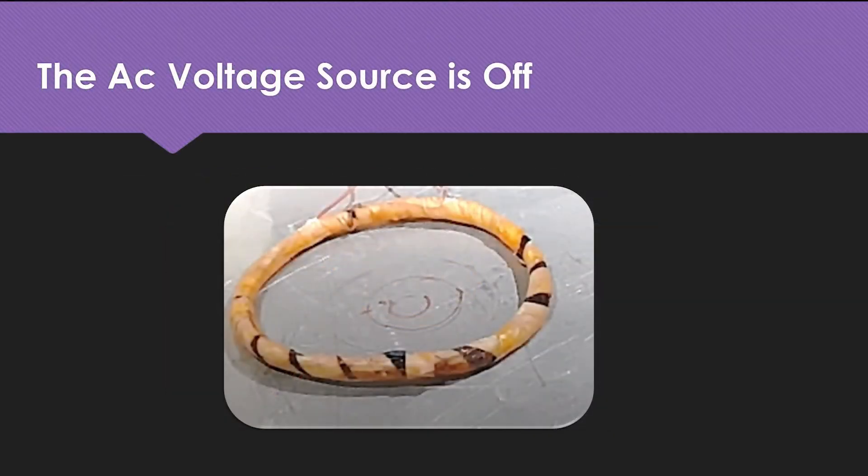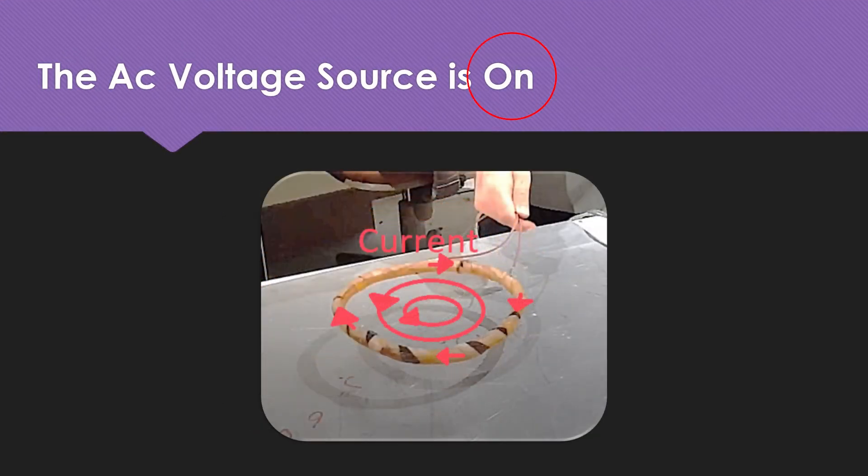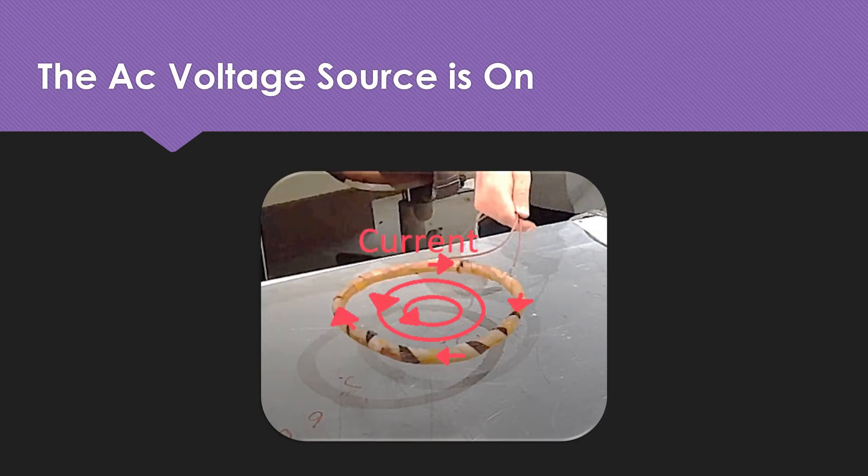To make the coil hover we have to power it with AC voltage. When the AC power is off nothing happens. As we turn on the AC power, the current starts to flow in the coil and it generates a changing magnetic field. The changing magnetic field induces a voltage and therefore current in the aluminum sheet due to Faraday's law. The direction of this current is indicated by Lenz's law.